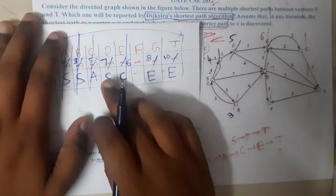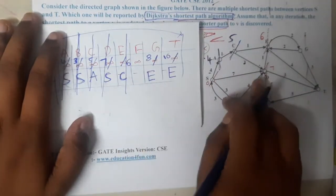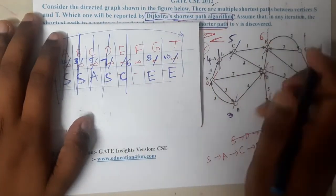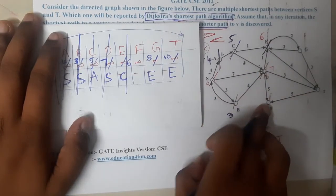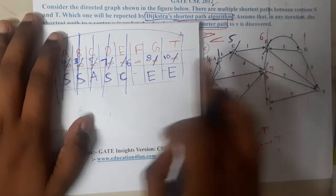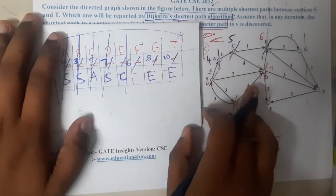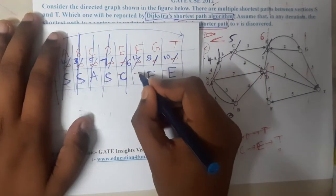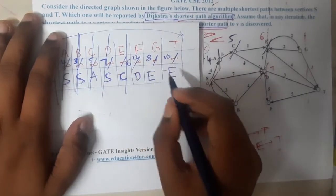The next minimum is d with distance 7. From d, e is already done. To t the cost is 7+3=10, which equals the current value of 10 — no update since it is not strictly less. To f the cost is 7+5=12 — f is updated to 12 with parent d.